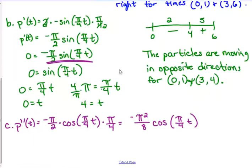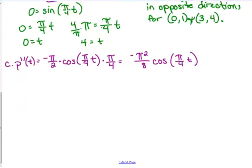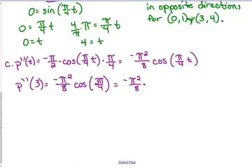We need to find it at time 3. So P double prime of 3 is negative pi squared over 8 cosine of 3 pi over 4. Cosine of 3 pi over 4, that's in the second quadrant. Cosine is negative there. So we've got negative pi squared over 8 times negative square root 2 over 2. Negative times a negative is a positive. So that is pi squared square root of 2 over 16. It's a really weird looking answer, but it is what it is. That's P double prime of 3.